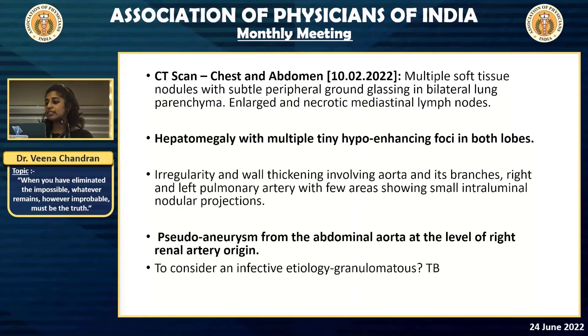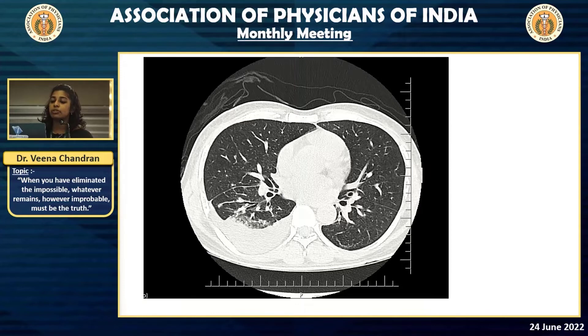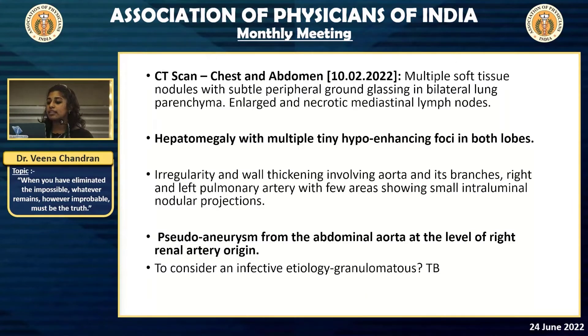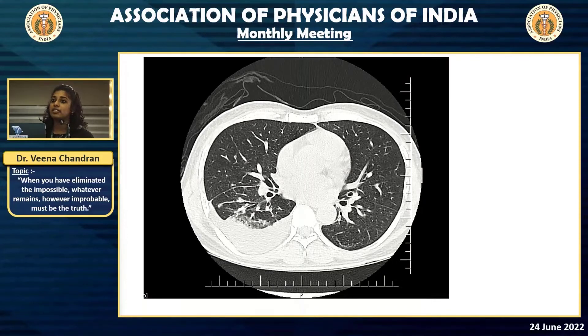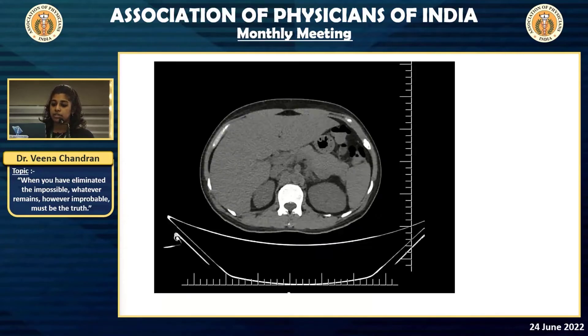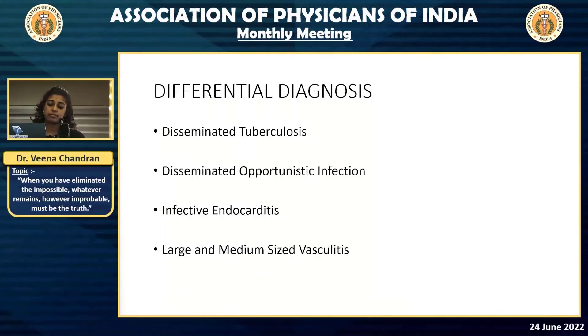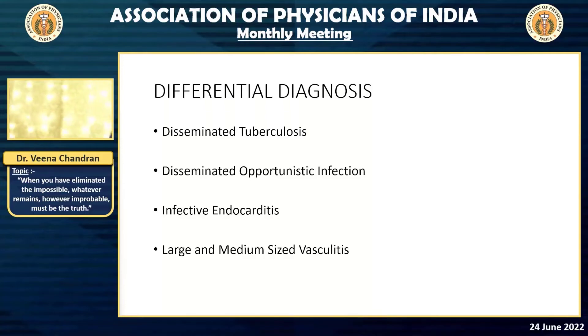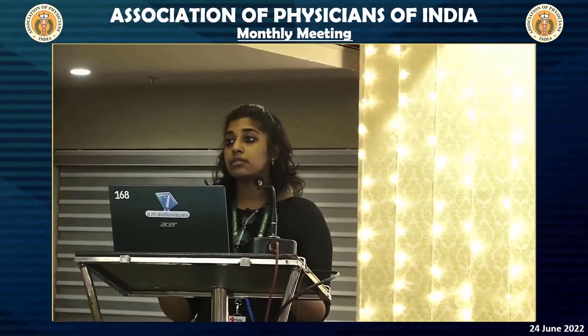The CT scan showed right-sided pleural effusion with ground glass opacification, as well as a pseudoaneurysm at the level of the abdominal aorta at the level of the origin of the renal artery. When we initially saw the aneurysm, our first thought was that we were dealing with some form of vasculitis. We went back to the radiologist and our immunologist. In vasculitis, or secondary to seronegative arthritis like rheumatoid vasculitis, the pattern of aneurysm is quite different — usually the aortic root is involved. We also had suspicion of a possible mycotic aneurysm.